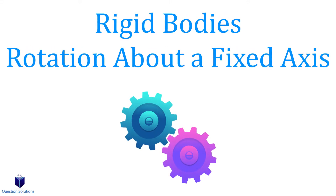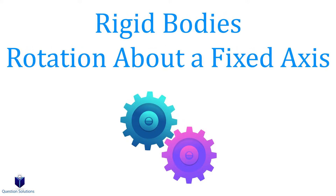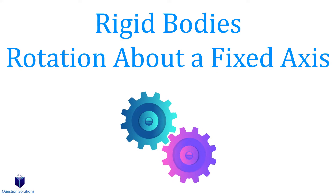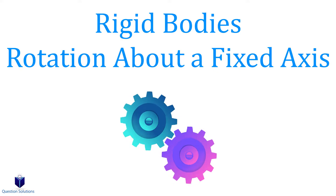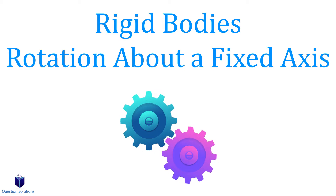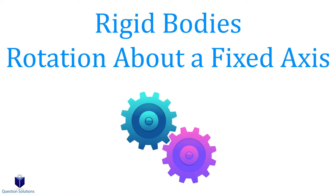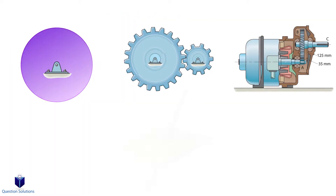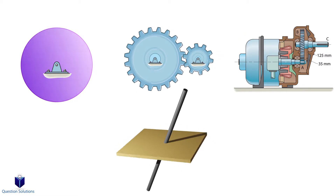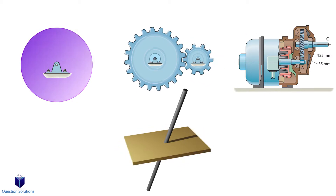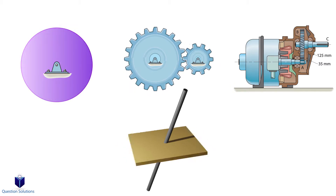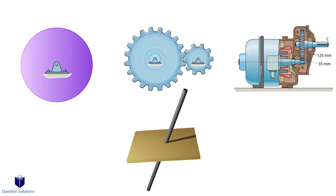In this chapter, we will take a look at rigid bodies, especially the rotation about a fixed axis. First, we will go over some basics and the equations we will need to solve these problems, and then we will solve a few examples from easy ones to hard ones. By the end, you should be able to solve many if not all the problems you will face in this chapter.